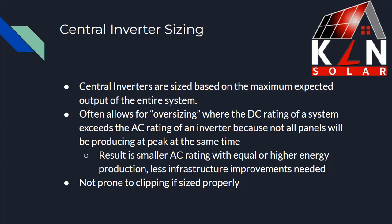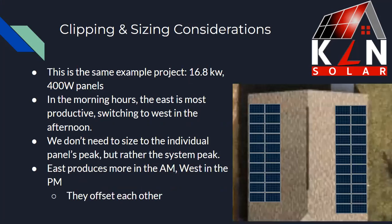How do you size a central inverter? Here you're looking at the maximum expected output of the whole system. This allows for oversizing, where the DC rating of the system is larger than the AC rating of the inverter, because not all panels are going to be producing at peak at the same time. Because of this, you get smaller AC ratings with equal or higher energy production, meaning less infrastructure improvements and the ability to sometimes avoid main panel upgrades. If sized properly, these inverters are also not prone to clipping. Going back to our 16.8 kilowatt case study — in the morning the east produces, in the afternoon the west, but they offset each other.